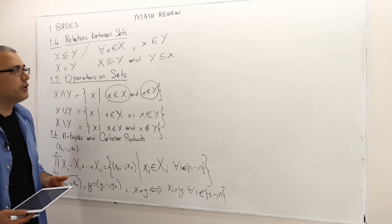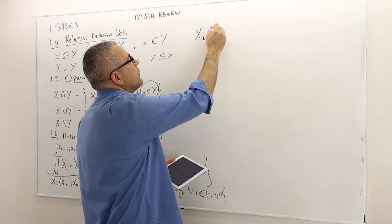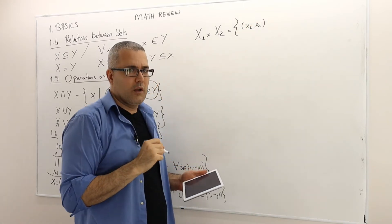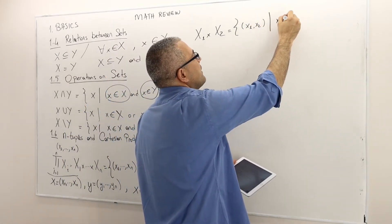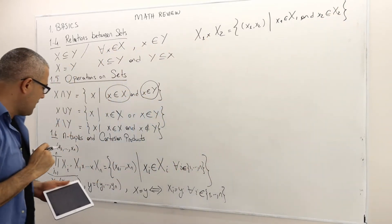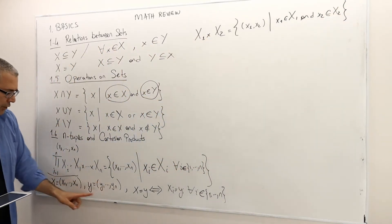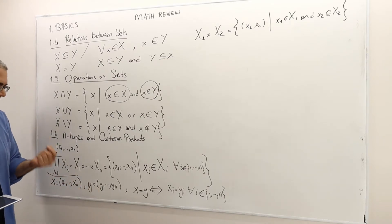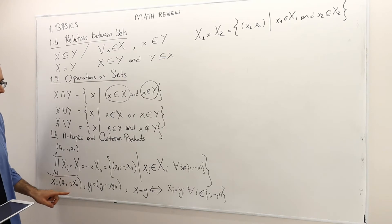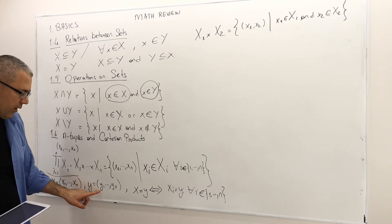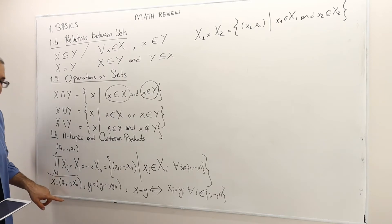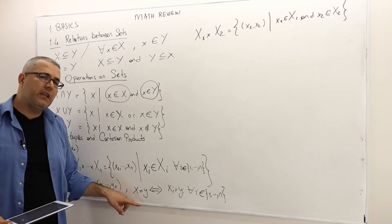For example, if n equals 2, I have X1 cross X2. An element is a vector with two components, x sub 1 and x sub 2, such that x1 is in capital X1 and x2 is in capital X2. If X and Y are two vectors of the same dimension, then X equals Y if and only if every single component is equal: x1 equals y1, x2 equals y2, all the way up to xn equals yn.